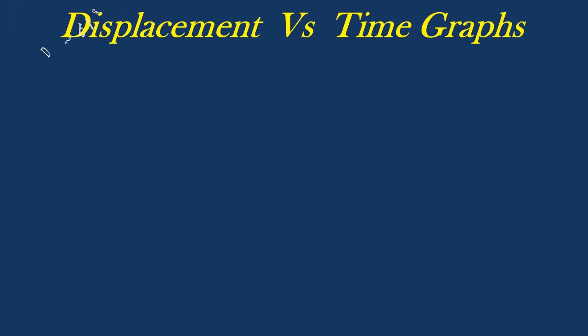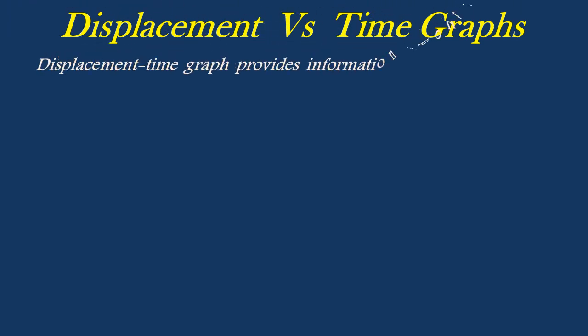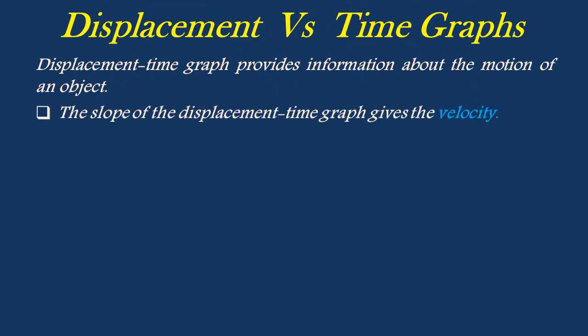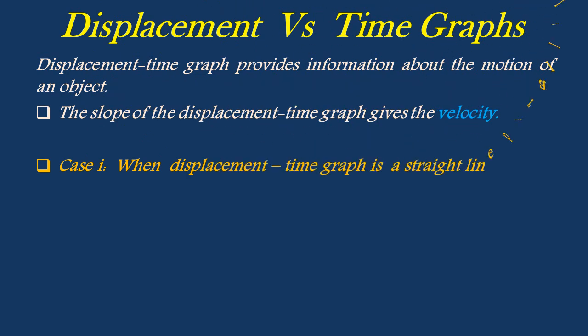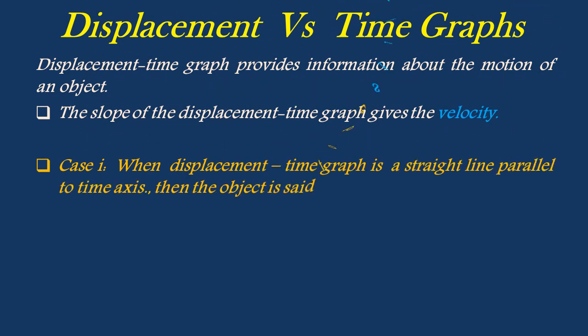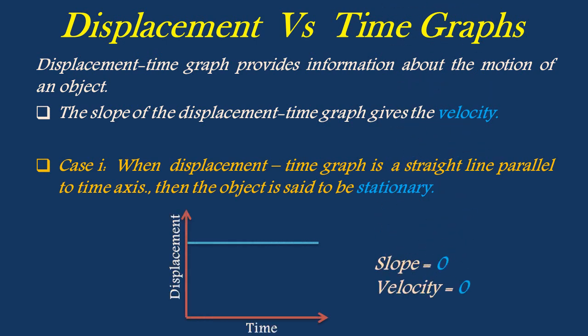Let's discuss about displacement-time graphs. The displacement-time graph provides information about the motion of an object. The slope of the displacement-time graph gives us the velocity of the object. When the displacement-time graph is a straight line parallel to the time axis, then the object is said to be stationary — the body is not moving or is at rest. As the displacement is constant with respect to time, the velocity and slope of the object is zero.